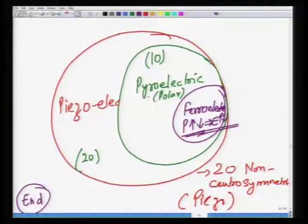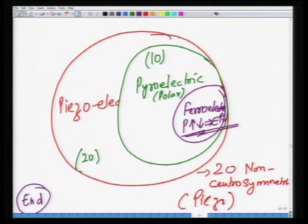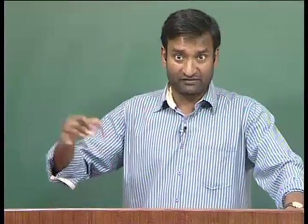The requirement for piezoelectricity is that the material should be non-centrosymmetric. Out of these 20, ten are pyroelectric, which are polar — they have a unique polar axis along which properties differ. Out of these ten, a few are ferroelectric, in which the direction of polarization along the polar axis can be reversed by reversing the electric field. Therefore, all ferroelectric materials are pyroelectric and piezoelectric, but vice versa is not true.